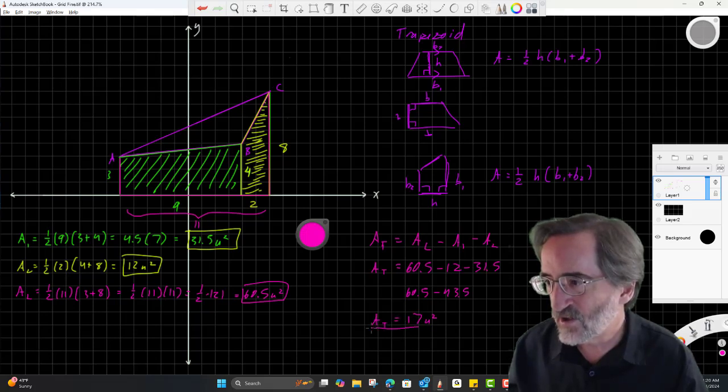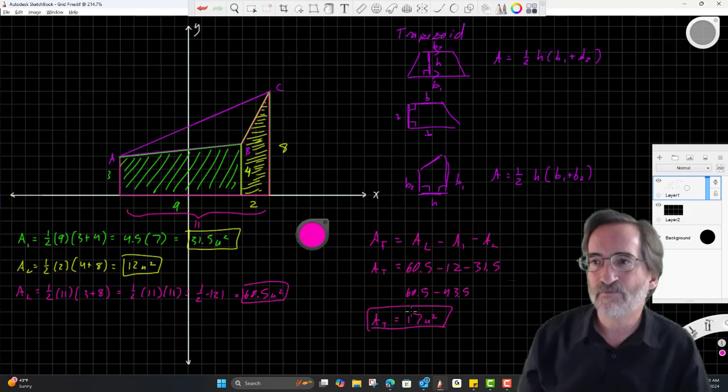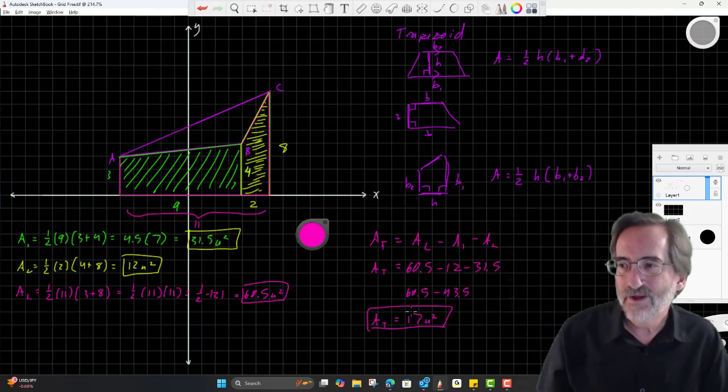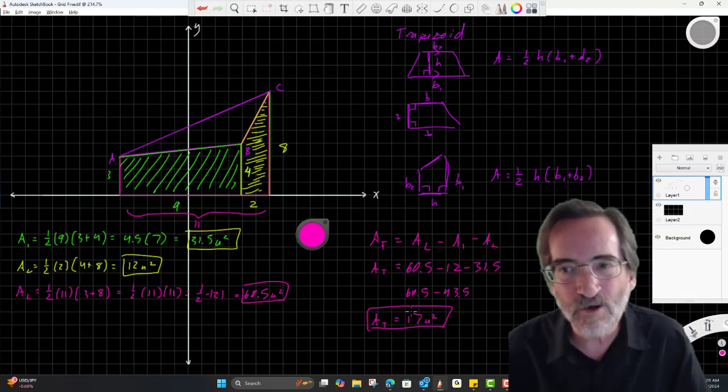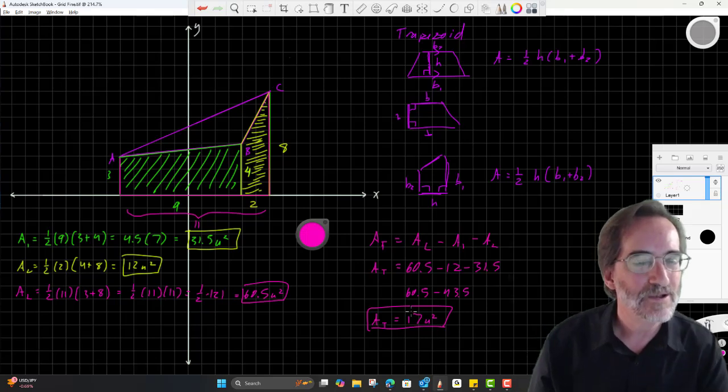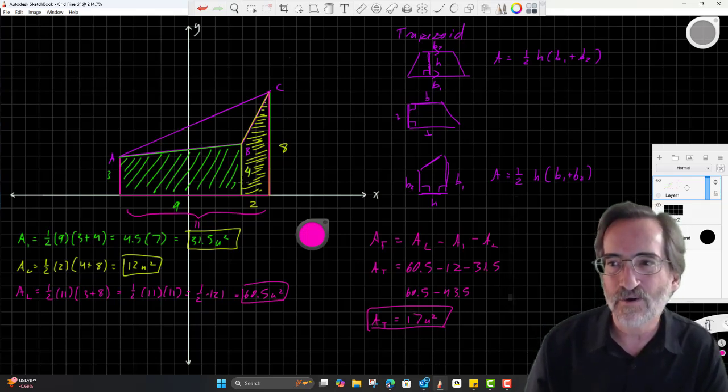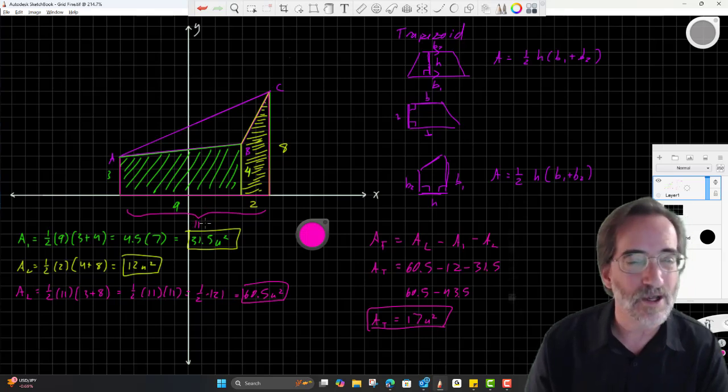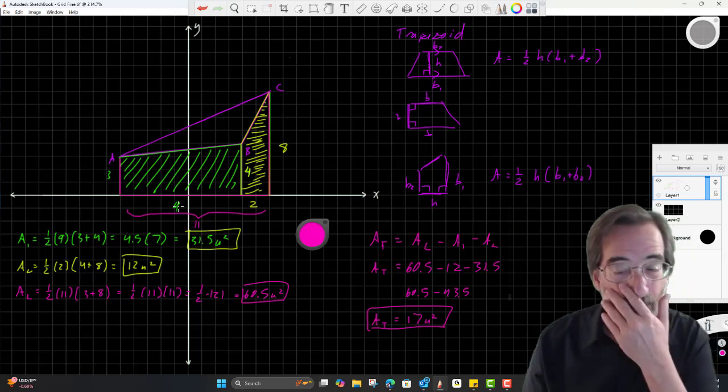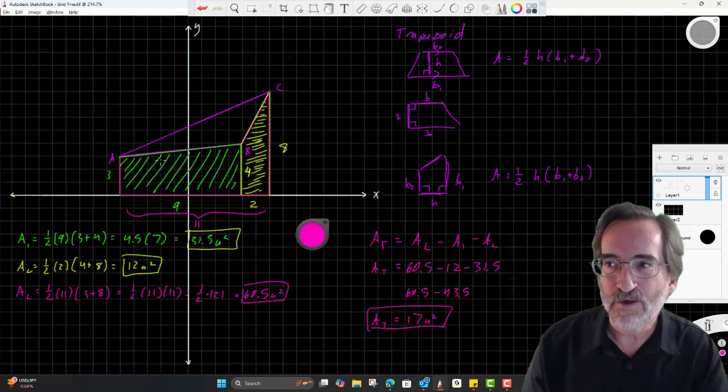Yeah, definitely smaller than last time. So that's kind of a summary of the trapezoid method for finding the area of a triangle. Again, it doesn't work very well if the triangle straddles the x axis or the y axis, or both actually. In which case I would go to embedding it in a rectangle instead.